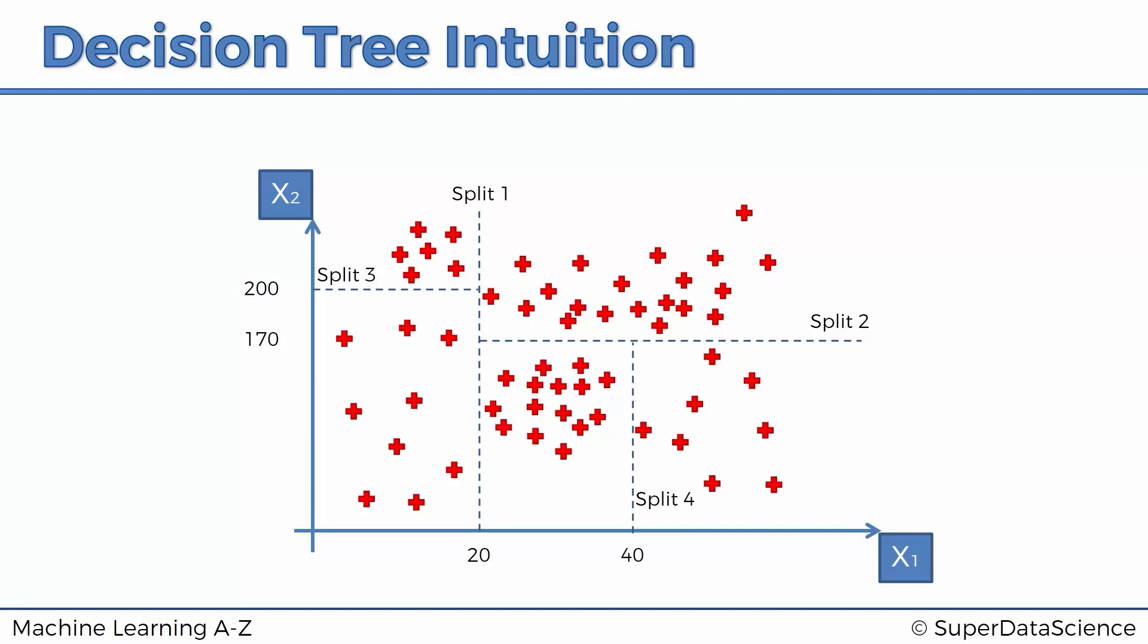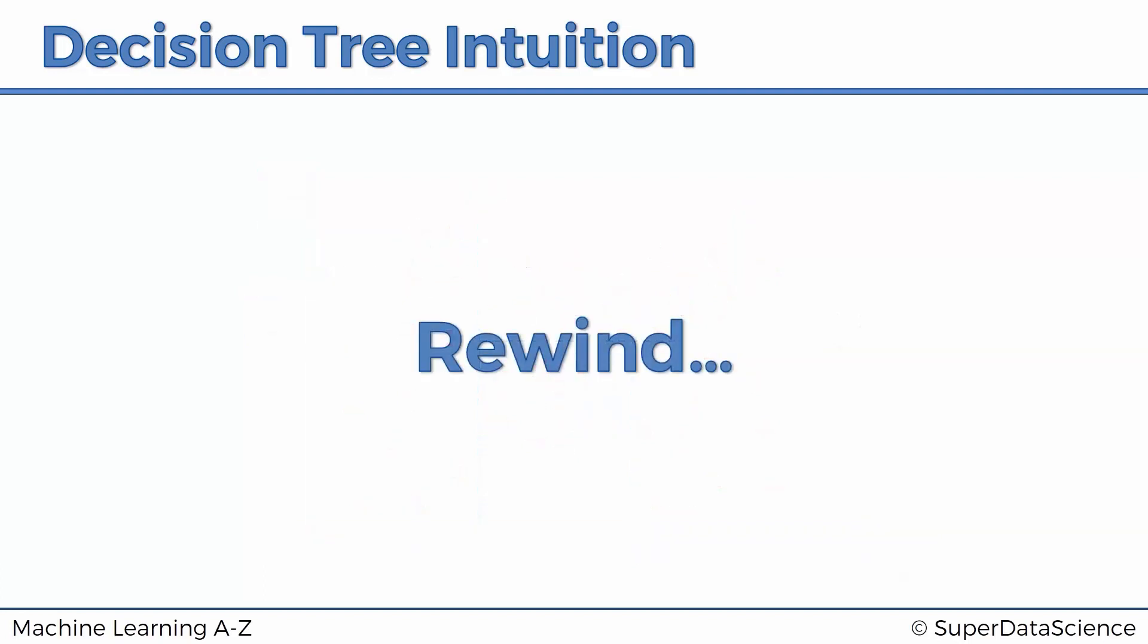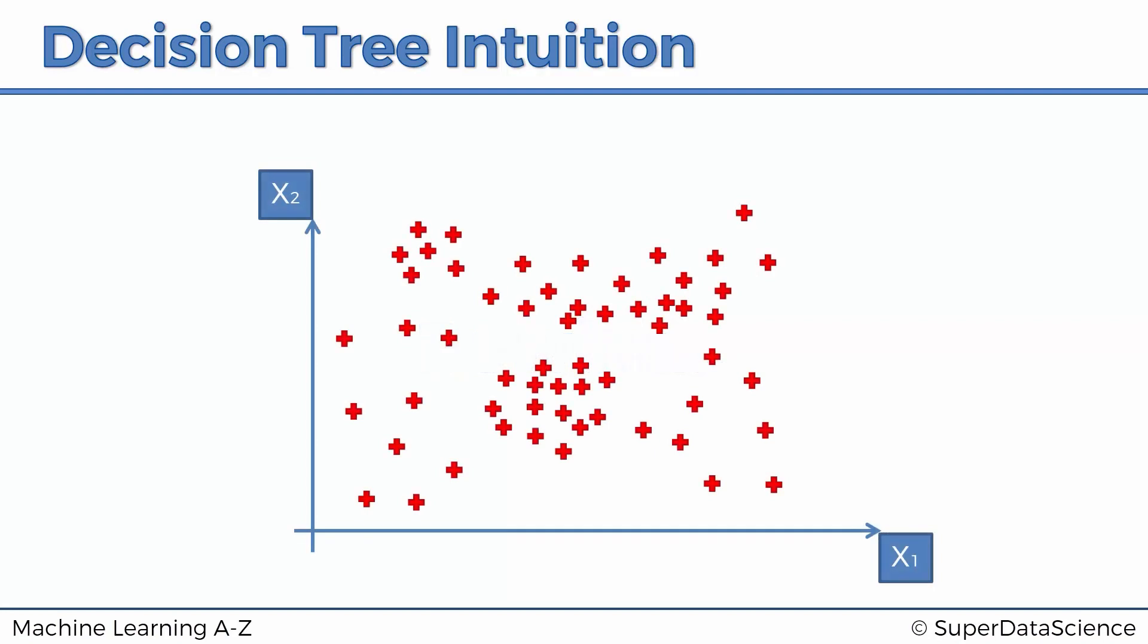Alright, so hopefully we're on the same page. Let's continue. We're going to rewind all of this a little bit and create these splits one by one, and alongside we're going to actually start drawing our decision tree. So there's our diagram brand new and fresh, and there goes our first split. The split happened at 20.